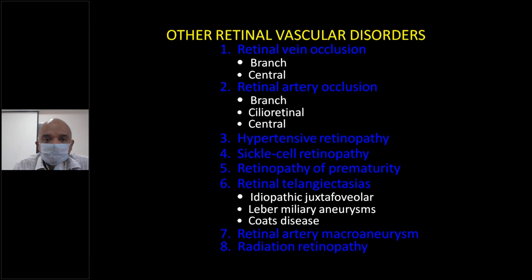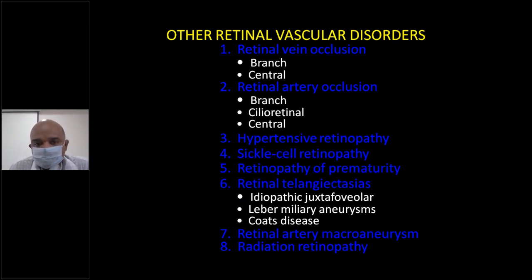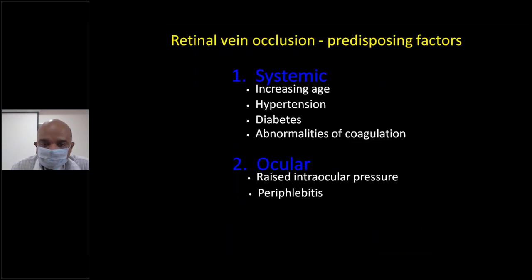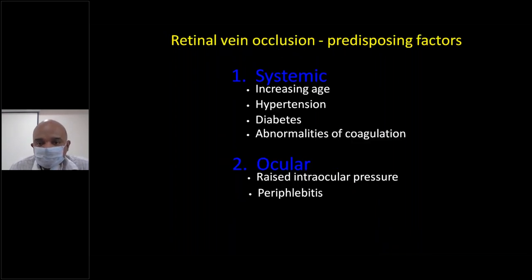What are the different types of retinal vascular disorders? These include retinal vein occlusion, retinal artery occlusion, hypertensive retinopathy, sickle cell retinopathy, retinopathy of prematurity, retinal telangiectasia, retinal artery microaneurysm, and radiation retinopathy. We are discussing only the vein occlusion.